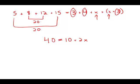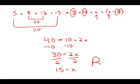Now I want to isolate x, of course. So I'm going to subtract 10 from both sides. 30 equals 2x. The last step to isolate x is I divide both sides by 2, and we get 15 equals x. And this corresponds to answer choice B.